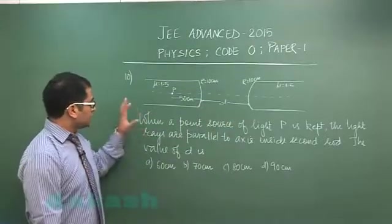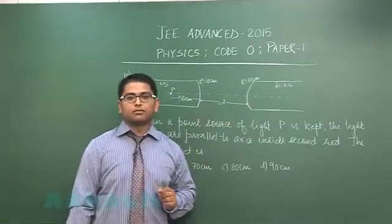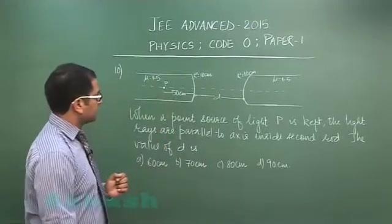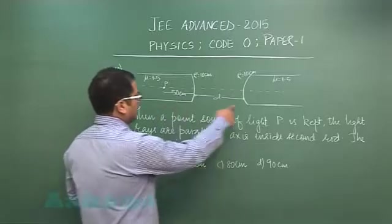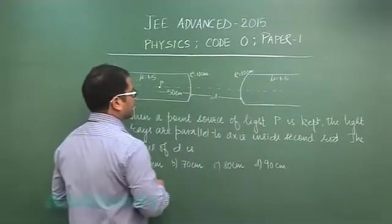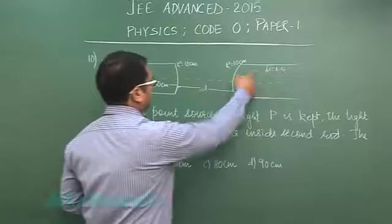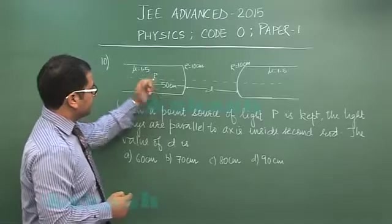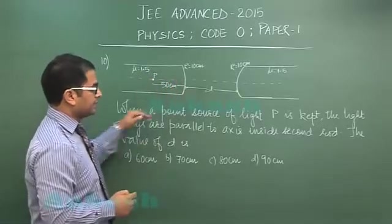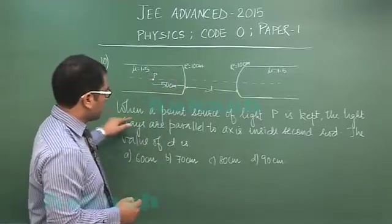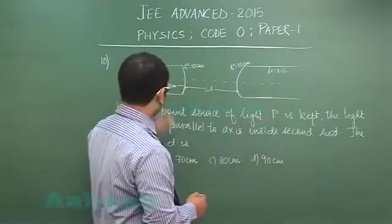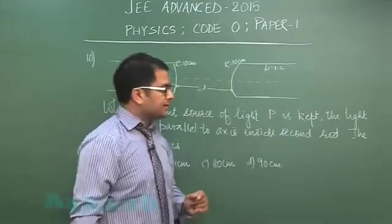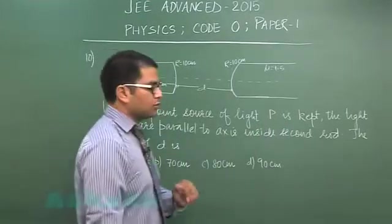Question number 10 again is from ray optics and it's from refraction from spherical surface. Two glass rods given of radii 10 cm each and they have refractive indices 1.5. A point source of light p is kept 50 cm inside which is also specified here. When a point source of light p is kept, the light rays are parallel to the axis inside the second rod and we need to calculate the value of d.